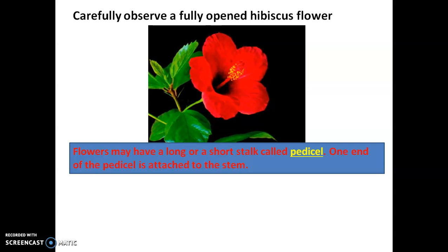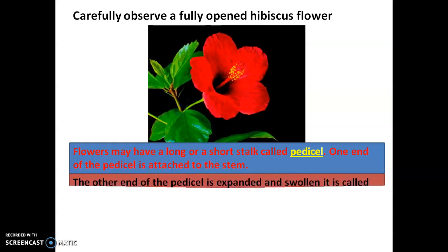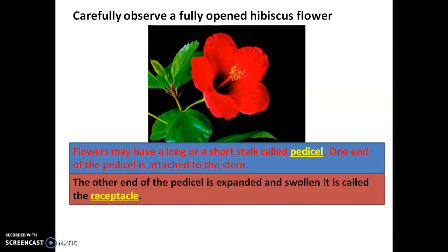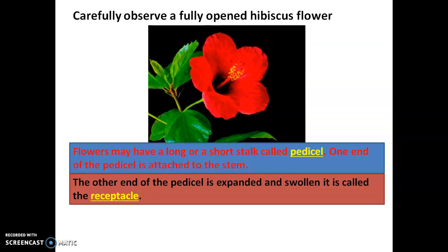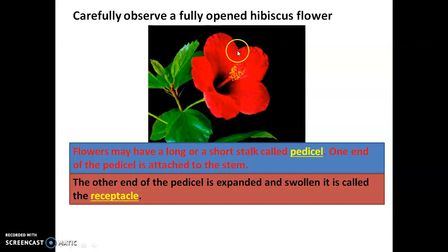One end of pedicel is attached to the stem. So this is the stem of the plant and one end of pedicel is attached to the stem. Then the other end of pedicel is expanded — expanded means wide and swollen — and it is called as receptacle. So this one end is attached to the stem, and this other end which is expanded and swollen is called as receptacle.